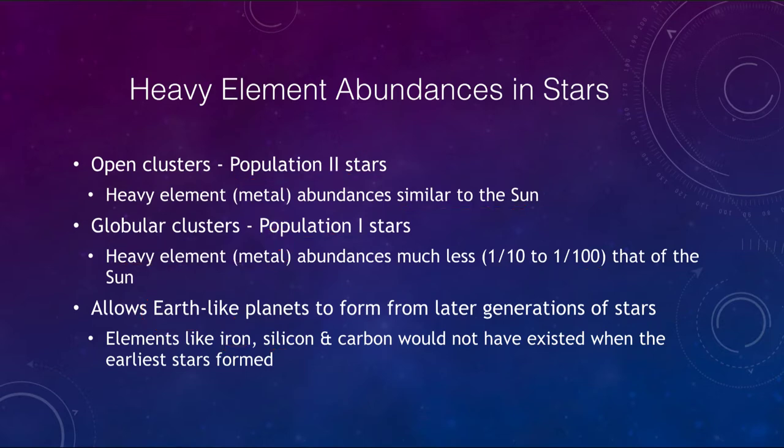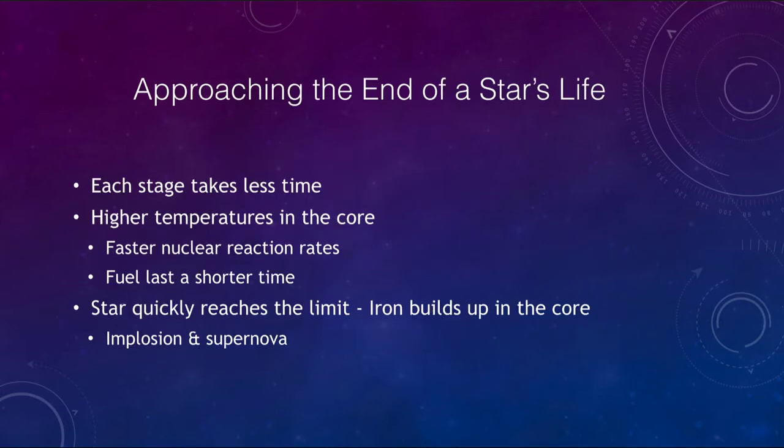Let's look at what happens as we approach the end of the life of a star much more massive than the sun. Each stage takes a shorter and shorter period of time. The time becomes less each time, the temperatures get higher, which means that nuclear reaction rates are going to go faster and the fuel will last a shorter time. We have stages that might last millions of years, then hundreds of thousands of years, then tens of thousands of years, and you work your way down to things like a thousand years for one source of fuel, then a hundred, then just ten, then just one year, and then even less than one year.